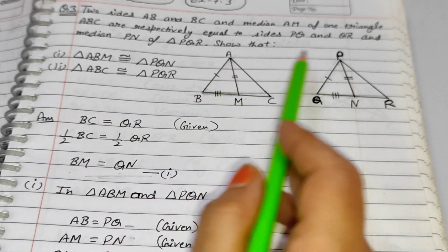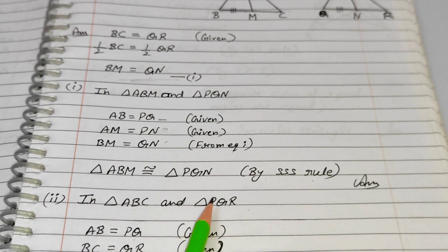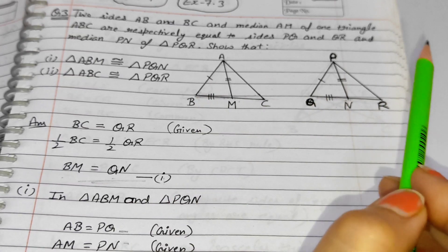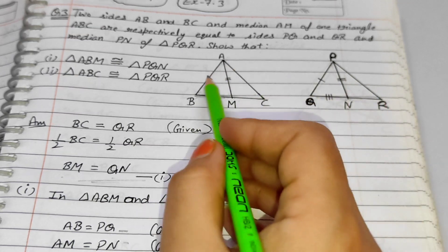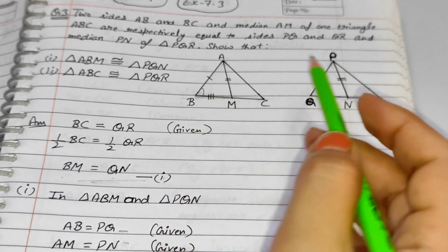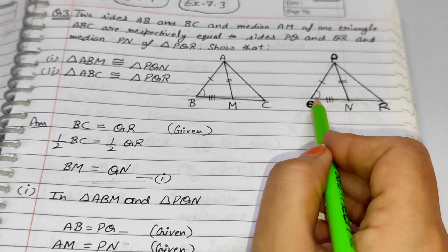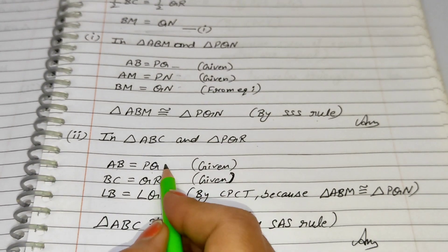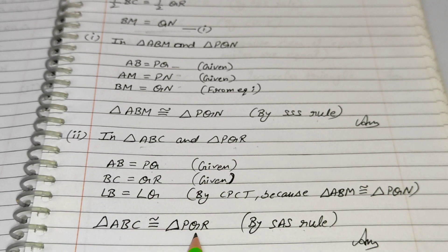Now show the whole triangles are congruent. In triangle ABC and triangle PQR: AB equals PQ (given), BC equals QR (given). Since triangle ABM is congruent to PQN, angle B equals angle Q by CPCT. So with two sides and the included angle equal — by SAS (Side-Angle-Side) rule, triangle ABC is congruent to triangle PQR.